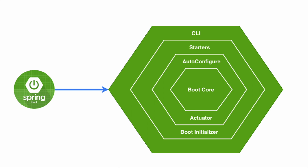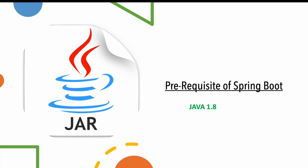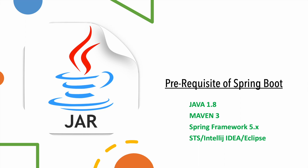In this diagram we can see what Spring Boot contains: starters, auto-configuration, and Spring Boot Initializer for initialization. To develop a Spring Boot application we require some tools: Java 1.8 or any higher JDK version, Maven 3 or higher, the Spring framework, and any IDE such as Spring Tool Suite.